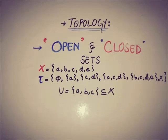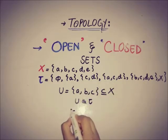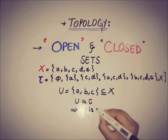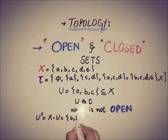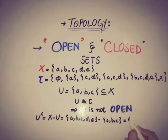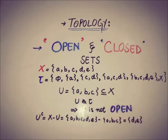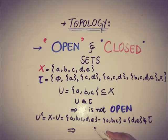It is not a member of the topology, so u does not belong to tau, which implies that u is not open. But it doesn't mean that it is closed — we have to check whether u is closed or not. Taking the complement of u, that is x minus u: x is {a, b, c, d, e} minus u = {a, b, c}, giving us {d, e}. We check if {d, e} is present in the topology. As you can see, {d, e} does not belong to tau, which implies that u is not closed.